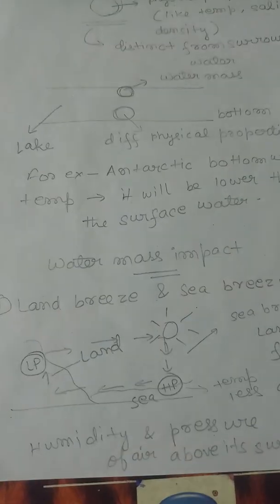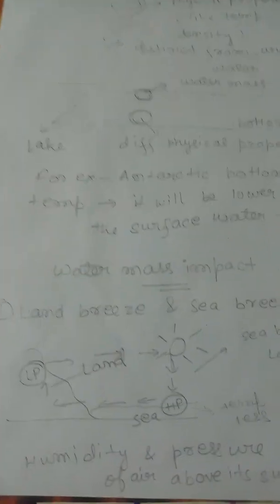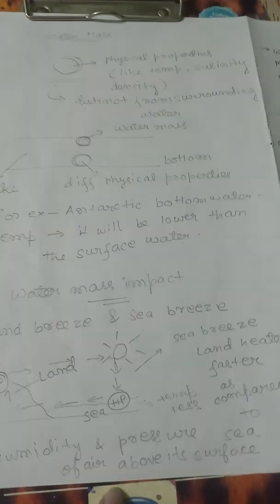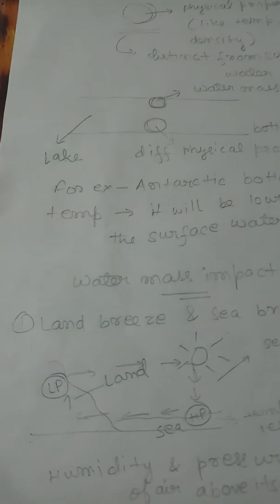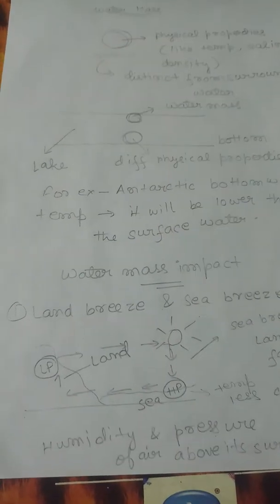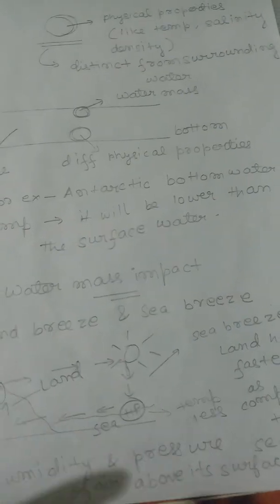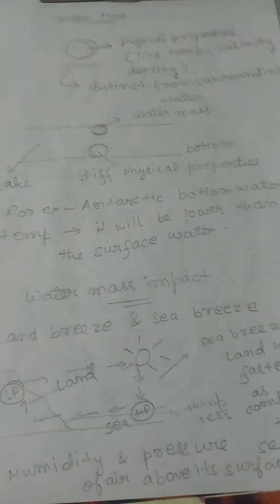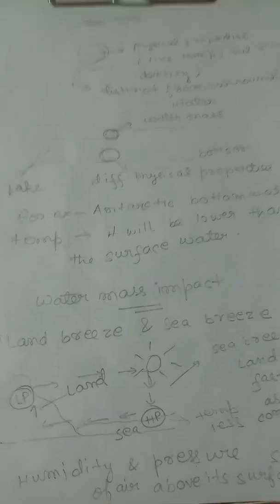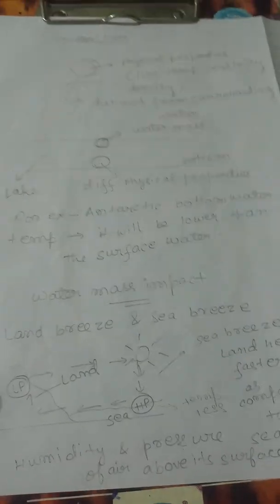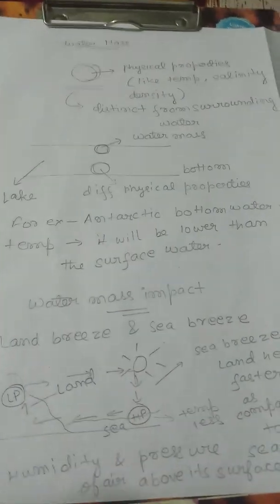So what is the impact of water mass? The humidity and pressure of air above its surface is determined by the water masses. Which type of water mass is present will decide the overall humidity and pressure of air.